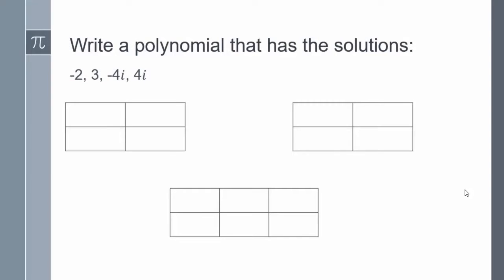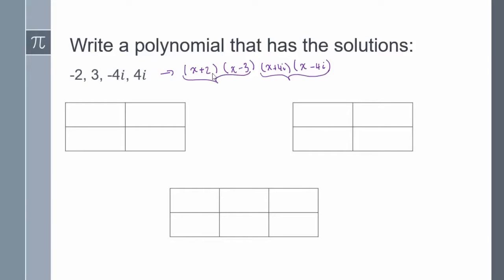Write a polynomial that has the solutions negative 2, 3, negative 4i, and 4i. Since I have four solutions, by the fundamental theorem of algebra, the degree of this polynomial has to be 4. I'll write each solution in factored form: negative 2 becomes x plus 2, positive 3 becomes x minus 3, negative 4i becomes x plus 4i, and positive 4i becomes x minus 4i. I'll multiply the first two factors together and the last two factors together, then take their products to get the final polynomial.